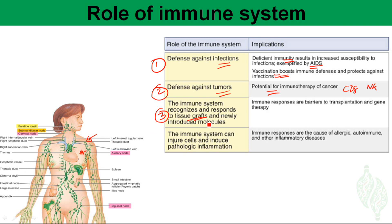When a foreign organ is introduced — such as in liver transplantation or skin transplantation — the immune system always tries to reject it through an immune reaction. The fourth role played by the immune system is producing inflammation, such as allergic reactions, autoimmunity, and other long-term inflammatory diseases.